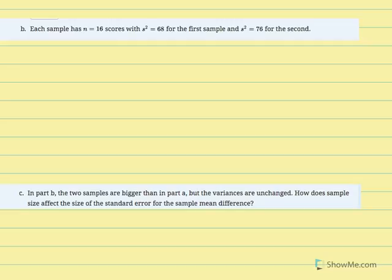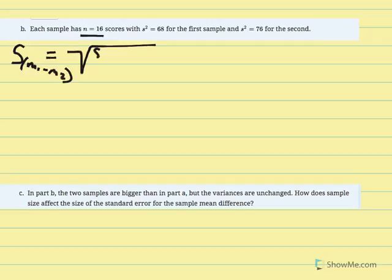Part B of number 11: now each sample has 16 individuals, with the same variances — 68 for the first sample and 76 for the second. We're changing sample size from 4 to 16 to see the effect on the estimated standard error of the mean difference. To calculate the estimated standard error, we still need pooled variance.